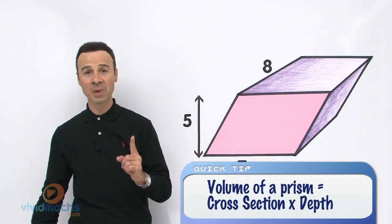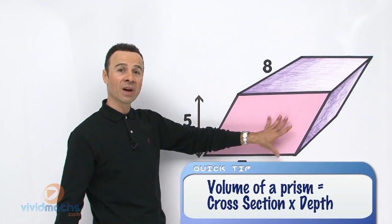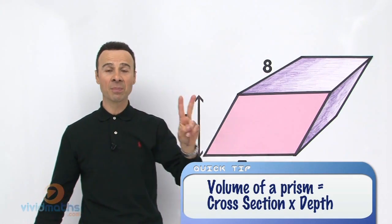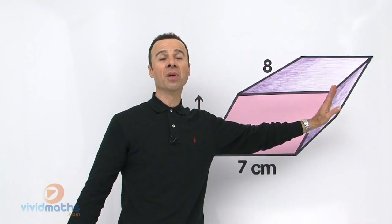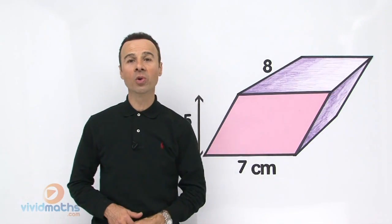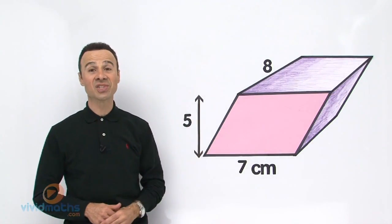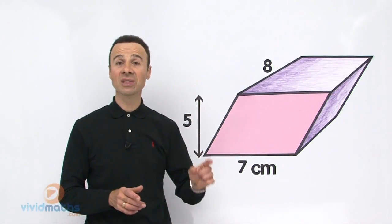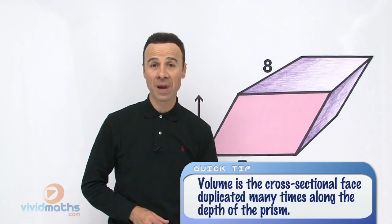So we are going to go through this in 2 steps. Step number 1: work out the area of the face, this pink area here. And step number 2 is multiply by the depth, and then we will get the volume. And of course all units here shown is in centimeters, so the answer will be in centimeters cubed to the power of 3.